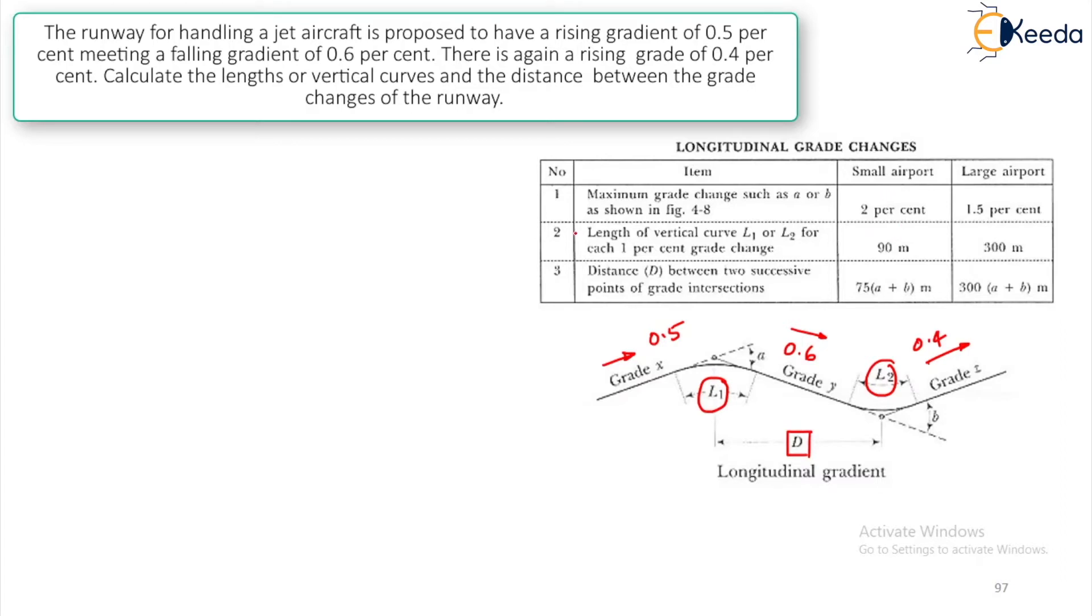You have already studied that the length of the vertical curve L1 or L2 for each 1% grade change is how much? 90 meters if it is a small airport and 300 meters if it is a large airport. Now let us first calculate what is the value of A. This A will be X minus Y, that is grade of X minus grade of Y. Now, if it is raising gradient we will take it as plus 0.5. This is a falling gradient, so we should take minus 0.6.